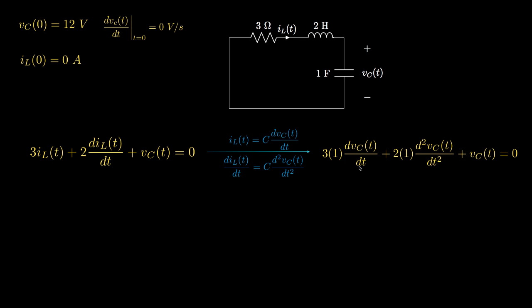Looking at this second-order differential equation, we have a constant driving function which happens to be zero. We can write its characteristic equation to determine the transient response of the circuit.